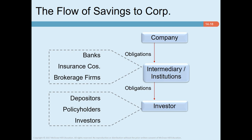An obvious question is: why are financial intermediaries different from manufacturing corporations? First, financial intermediaries may raise money in special ways, for example by taking deposits or by selling insurance policies. Second, financial intermediaries invest in financial assets such as stocks, bonds, or loans to businesses or individuals. By contrast, manufacturing companies mainly invest in real assets such as plant and equipment.